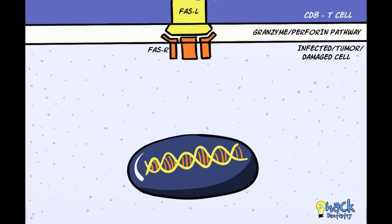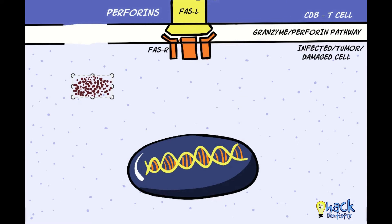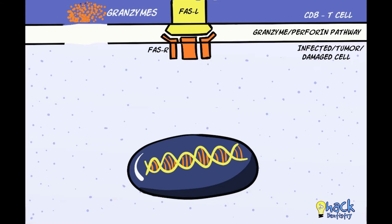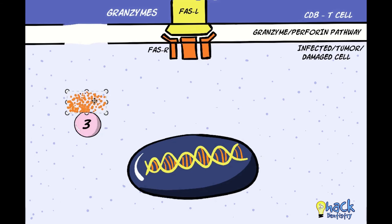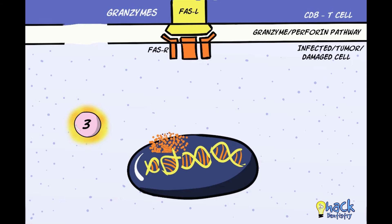At times the granzyme-perforin pathway is initiated on FAS ligand–FAS receptor interaction. T cells release perforins which form transmembrane pores on the cells, through which granzymes and other proteins secreted by T cells enter. Granzymes could either directly activate executioner caspase molecules or cause DNA cleaving, leading to apoptosis.